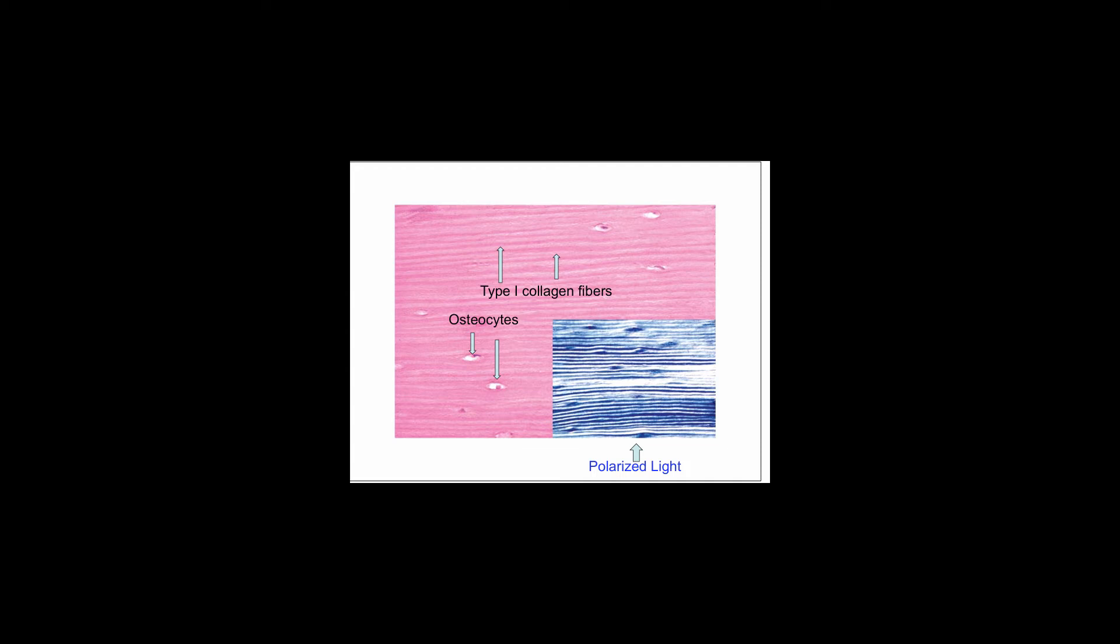Note the osteocytes or bone cells present in small spaces or lacunae, and oriented in the same direction as the collagen fibers. Cortical bone is thickest in areas with the largest torsional and weight bearing forces, such as the proximal femur.